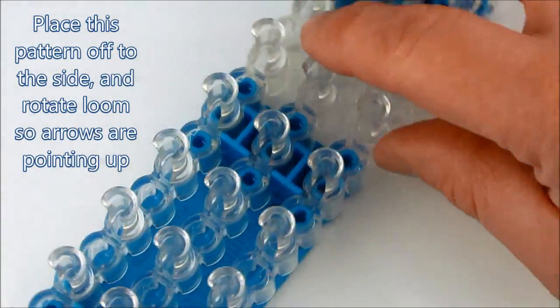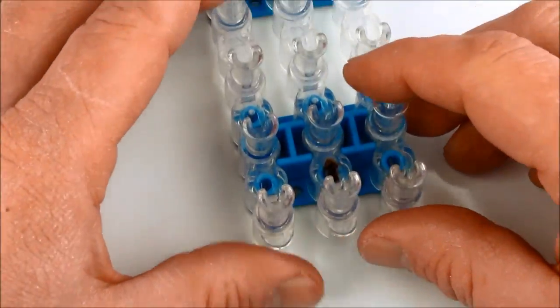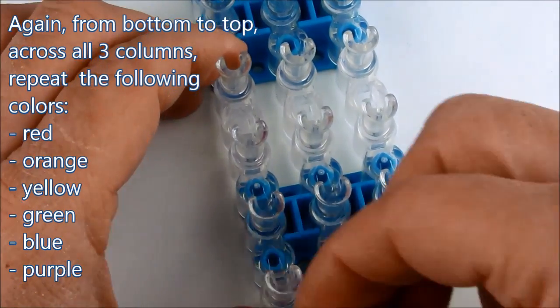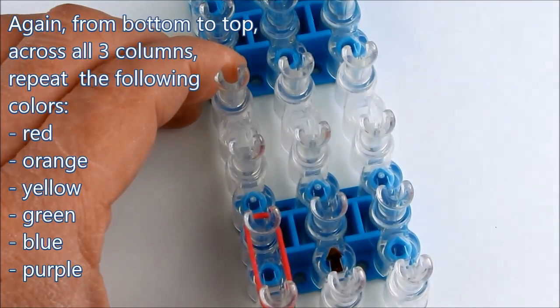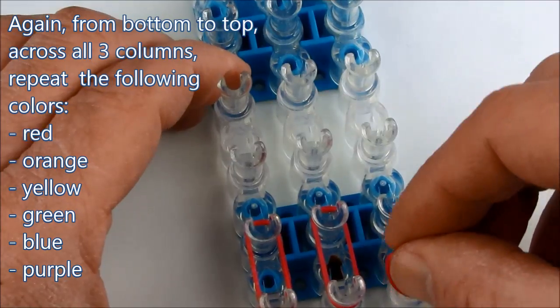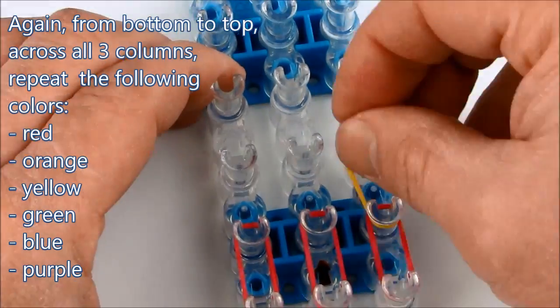Turn the loom around so that the arrows are pointing upwards, and we want to repeat the same pattern as we did before, starting off with the red at the bottom, followed by the orange, and then yellow, green, blue, and purple.